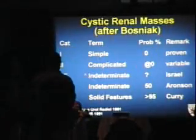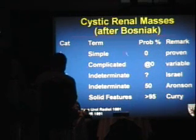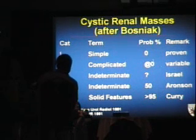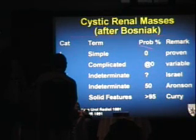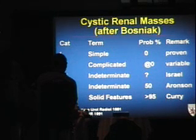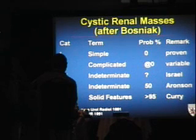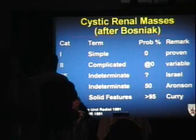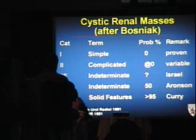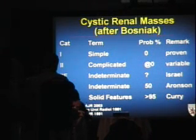The Bosniak categories are in order of ascending probability of malignancy. There has been no case of a simple cyst that turned out to be renal cell. Complicated benign cysts are reliably considered benign. Category 3 is about a coin flip — 50% probability — so surgery is required because we cannot definitively characterize an indeterminate renal mass as benign without surgery. Biopsy is limited. Solid features carry more than 95% chance of being malignant surgical lesions.